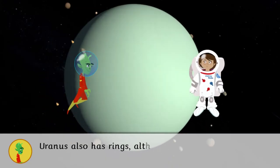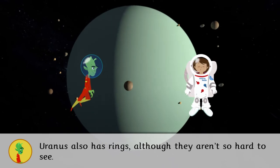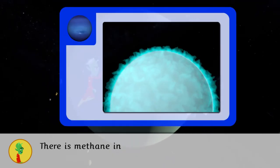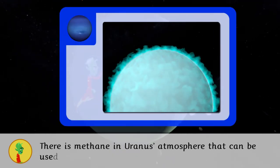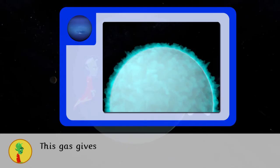Uranus also has rings, although they are hard to see. There is methane in Uranus' atmosphere that can be used as fuel. This gas gives it its blue color.